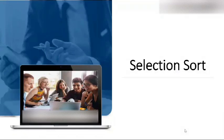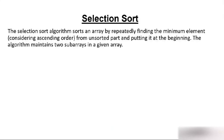Today the topic of discussion is selection sort. We'll understand what selection sort is, the steps involved, the algorithm, and iterate each and every step. Selection sort algorithm sorts an array by repeatedly finding the minimum element — considering ascending order — from the unsorted part and putting it at the beginning.